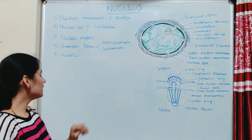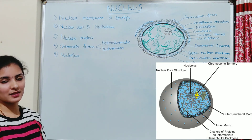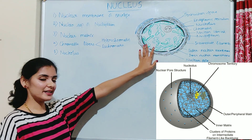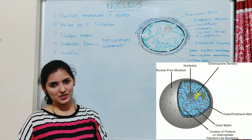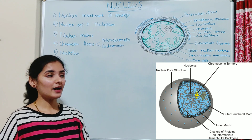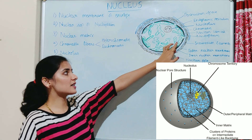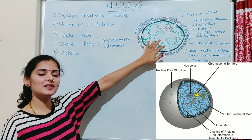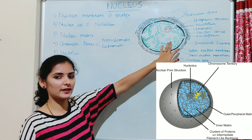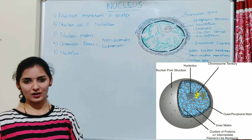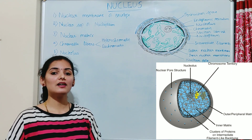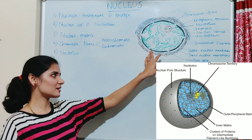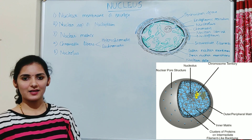The third component is the nuclear matrix, which is present in the nucleoplasm and is similar to the cytoskeleton. The nuclear matrix determines the nuclear space and helps in organizing chromatin inside the nucleus. It is an insoluble component of the nucleus.